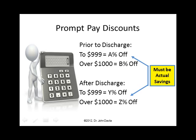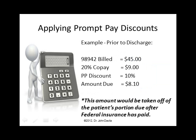If they paid you at a certain time, you'd calculate how much you'd save versus having to chase them down later. Here's an example: if you billed a 98942 at $45, a 20% co-pay would be $9. The prompt pay discount would be 10% — remember, this amount is taken off the patient's portion due after federal insurance is paid. So a 10% discount based on true actual savings means the amount due would now be $8.10, saving the patient only $0.90. You have to ask yourself: is that really worth it for the compliance nightmare, and is it really going to make a difference to a patient to save $0.90?